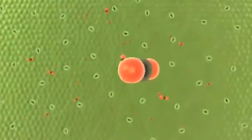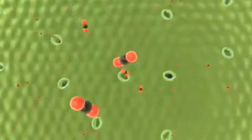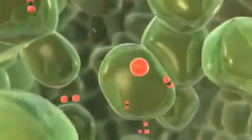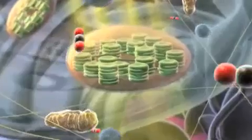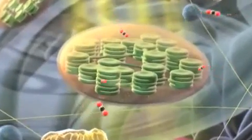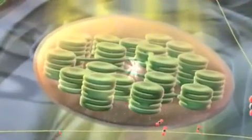Photosynthesis requires carbon dioxide, which diffuses into the leaf through small pores, and then enters the cells. Inside the cell, carbon dioxide diffuses into the chloroplasts, where photosynthesis takes place.